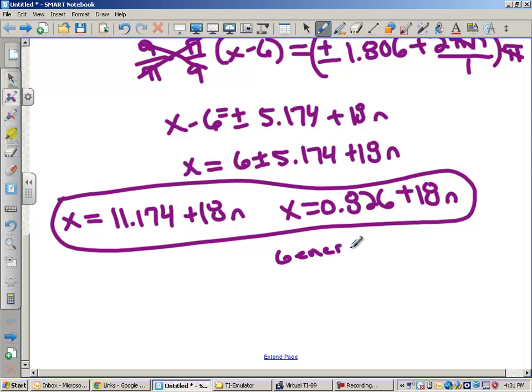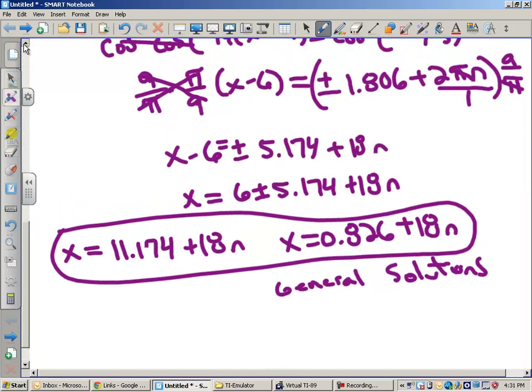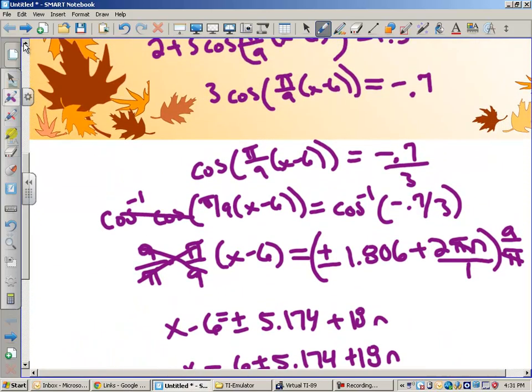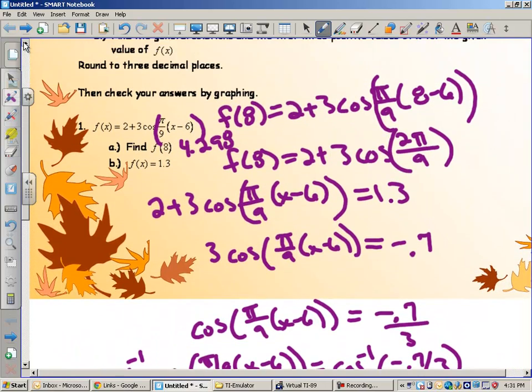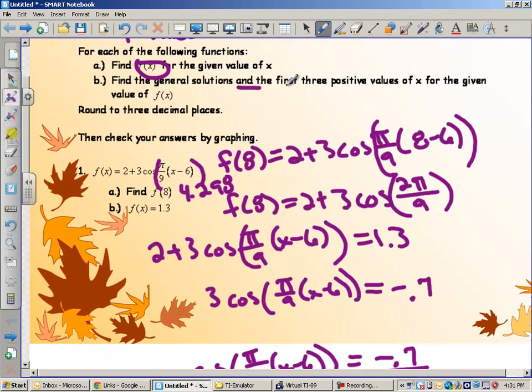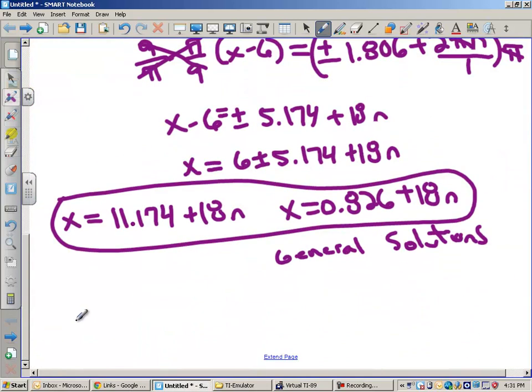Now, let's see if we're done. I think we have to find the first three positives. We have to find the general solutions and the first three positive values. Well, okay, so let's see what are the first three. The first positive value is 0.826. The second positive value is 11.174. The third positive value comes from this general solution, and I can add 18 to 0.826, and that gives me 18.826. So, these are my values for x. Let's go check this on the calculator.